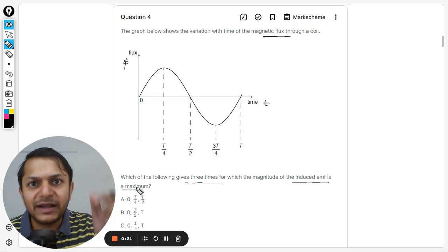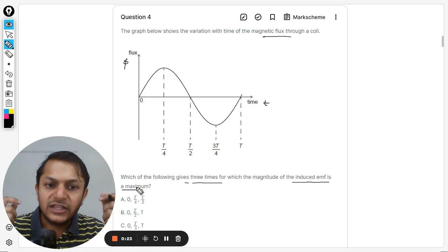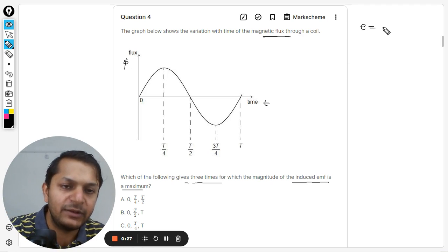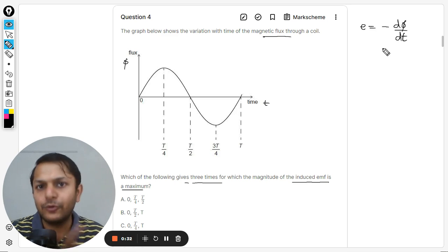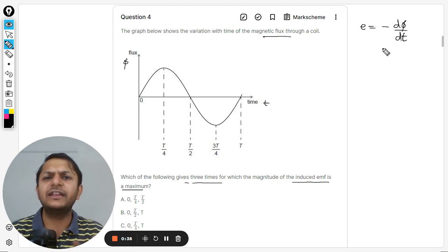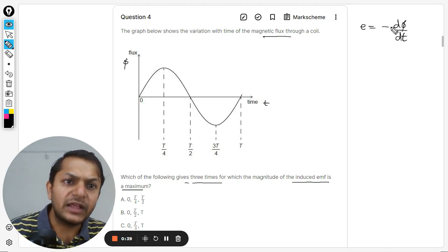Which of the following gives three times for which the magnitude of the induced emf is maximum? So you want this magnetic field to be, sorry, the induced emf to be maximum. By applying Faraday's law, I know that e will be given by negative of d phi by dt. Again, I'm going into calculus, but this is how you actually write it.